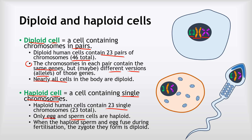When the haploid sperm and the haploid egg fuse together during fertilization, they form a cell called a zygote. That zygote is now diploid because it has 23 pairs of chromosomes, with one member of each pair coming from the sperm and the other coming from the egg.